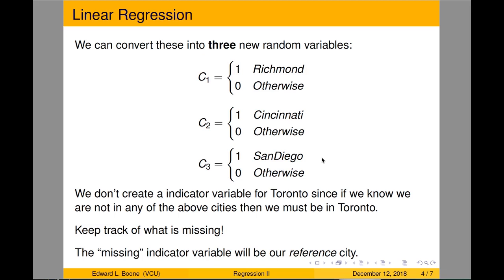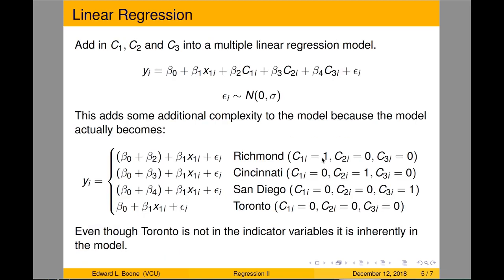Toronto becomes our reference city. I'm going to create a multiple linear regression adding in C1, C2, and C3. Notice that adding these indicator variables is just shifting the intercept. Toronto is actually in the model — because if C1, C2, and C3 are all zero, those terms drop out and we're left with just the base intercept terms. So Toronto ends up in the model even though we don't specify it explicitly — and that's the key.